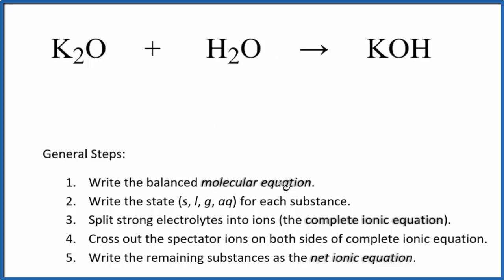The first thing we do with net ionic equations is balance the molecular equation. We have two potassium atoms here and just one here, so let's put a two in front of the KOH.